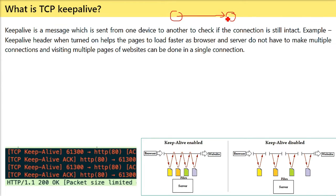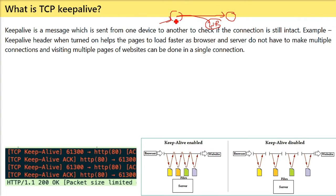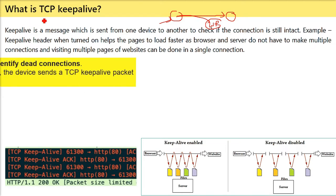For example, the Keep Alive header, when turned on, helps pages load faster as the browser and server do not have to make multiple connections. Visiting multiple pages of a website can be done in a single connection. You don't want every web page to require multiple connections, so Keep Alive helps with that. But basically, Keep Alive is a message for checking whether the connection is intact or not.